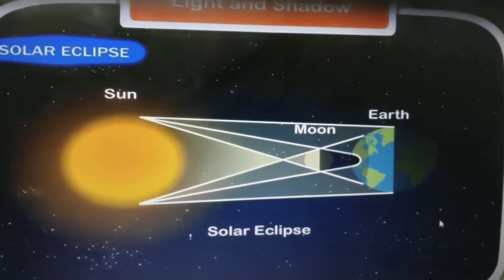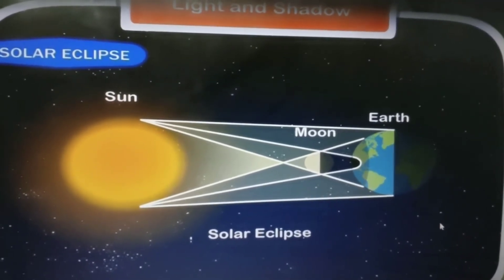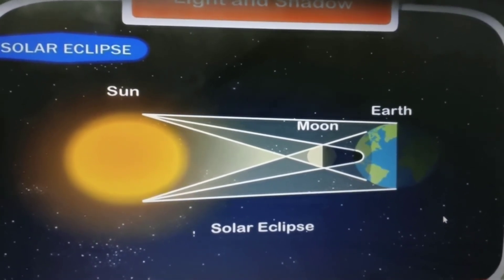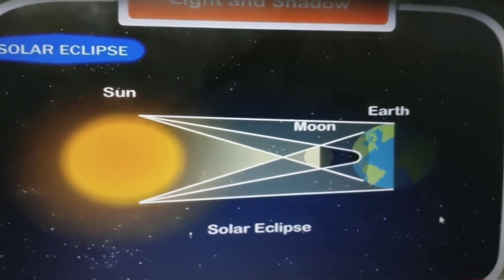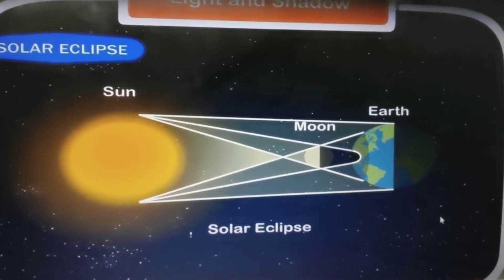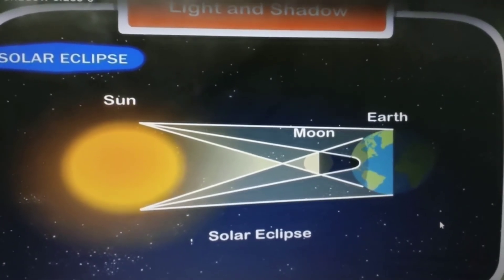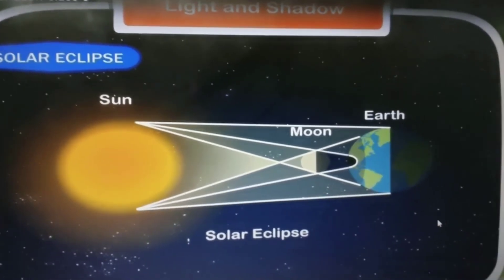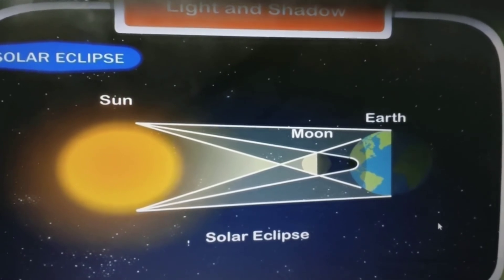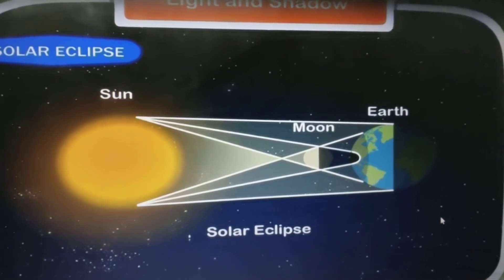The shadow of the moon falls on a portion of the earth, so people from that part cannot see the sun and we have a total solar eclipse there. There are two types of solar eclipses: total solar eclipse and partial solar eclipse. Areas where the sun cannot be seen at all have a total solar eclipse, but in some parts of the earth only a part of the sun can be seen — that is a partial solar eclipse.